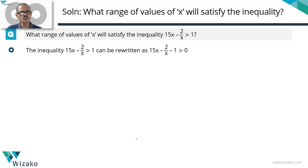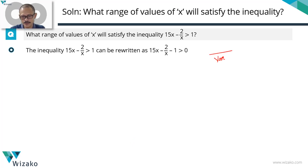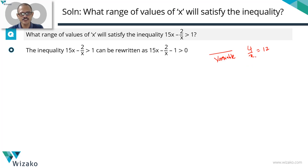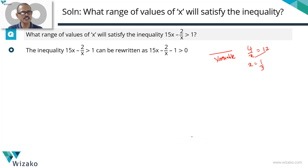Before we set about solving this, I would like to impress upon one very important fact — something that you should avoid. If you have an x term, a variable in the denominator of an expression, the default thing is, for example, if I had 4 by x equals 12, what is the value of x? We'll cross multiply, bring this 12 down. We'll say x is equal to 4 upon 12 or 1 by 3. This is perfectly all right when it is an equation.